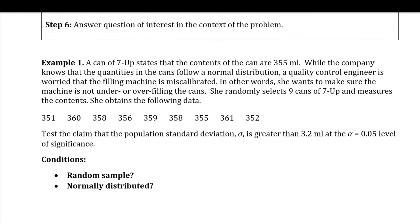Example one: a can of Seven-Up states that the contents are 355 milliliters. The company knows the quantities follow a normal distribution. A quality control engineer is worried the filling machine is miscalibrated — she wants to make sure the machine is not under- or over-filling the cans. She randomly selects nine cans of Seven-Up, measures the contents, and obtains data — the amount of milliliters from each of the nine cans.